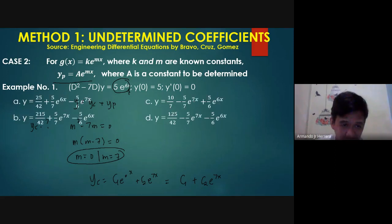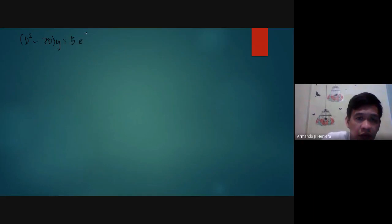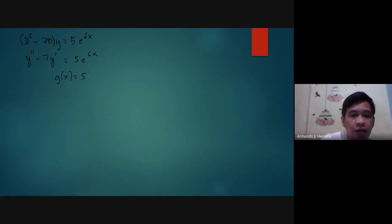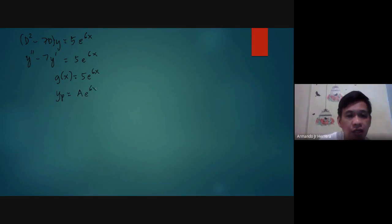Now let's solve for yp. Rewriting the equation: D squared minus 7D applied to y equals 5e to the 6x, or y double prime minus 7y prime equals 5e to the 6x. Since g of x equals 5e to the 6x, our trial solution is yp equals ae to the 6x.